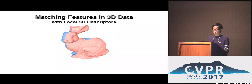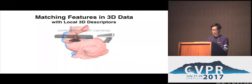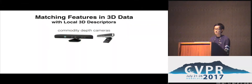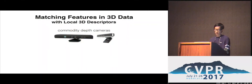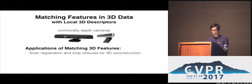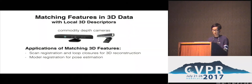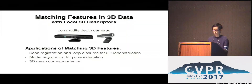With a good descriptor, you can match local geometric features between scanned surfaces to establish point-to-point correspondences and bring two surfaces into alignment. As many of you know, this task has been around in computer vision and graphics for ages, and with the recent rise of commodity depth cameras, it's becoming more relevant. Applications include scan registration and loop closures for 3D reconstruction, model registration for pose estimation, and 3D mesh correspondence.